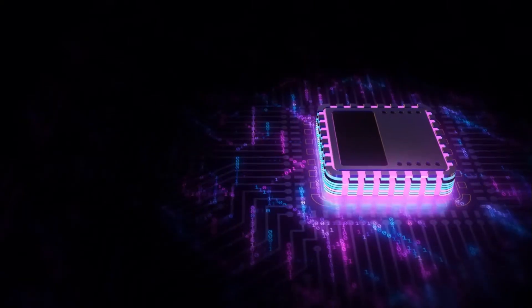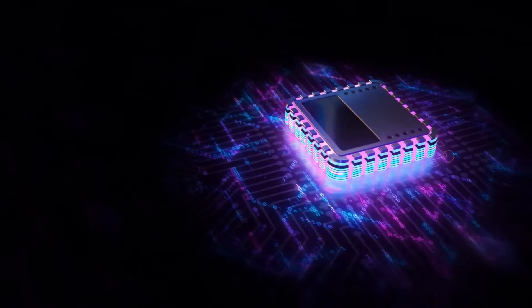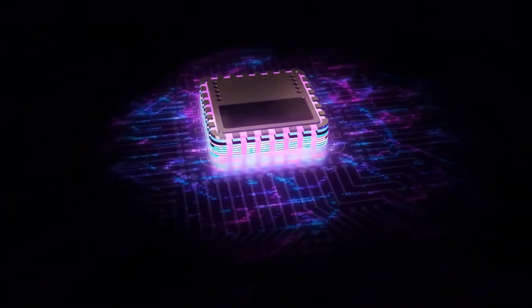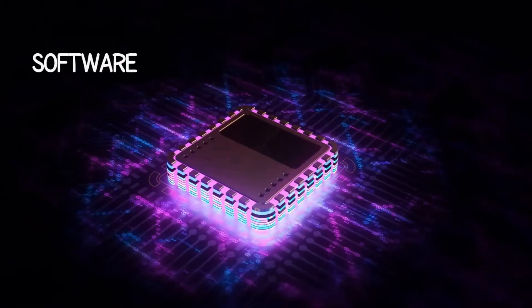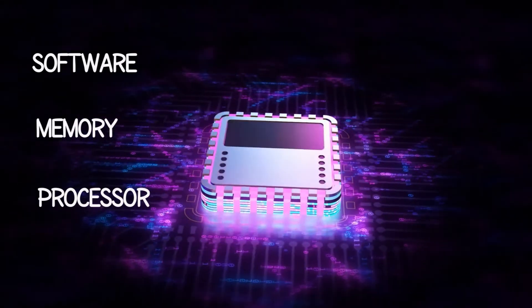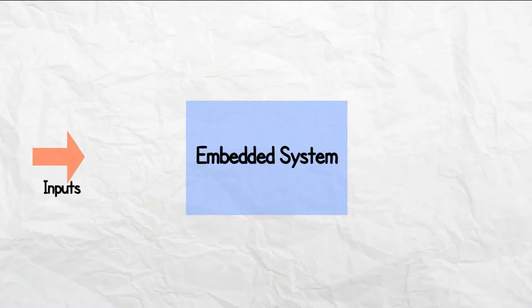An embedded system is a system or controller designed to perform certain dedicated functions. It mainly consists of software, memory, and a processor, and also contains different types of inputs and outputs.